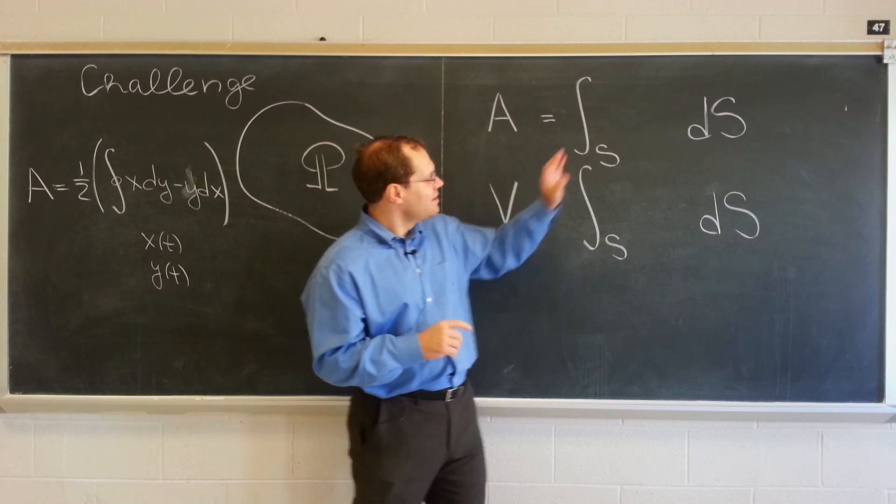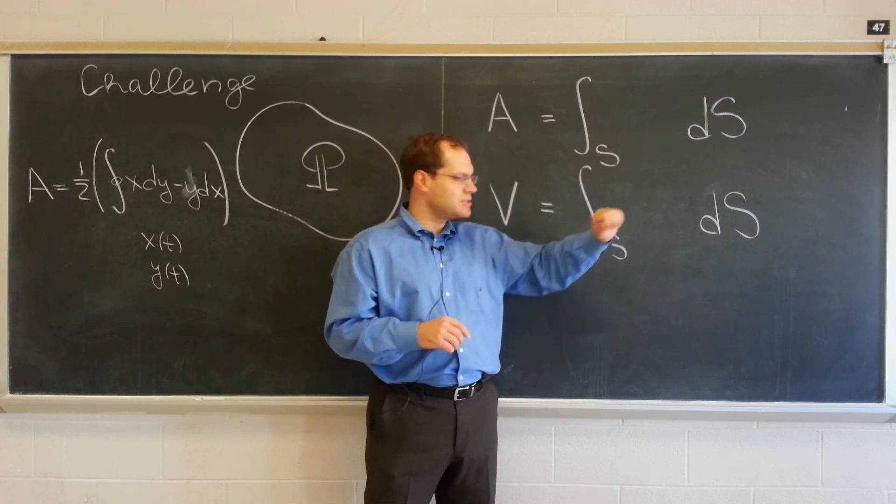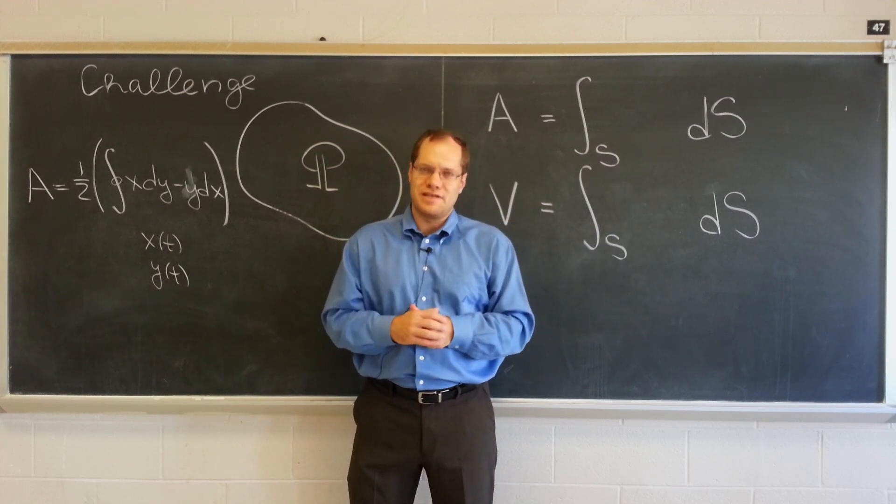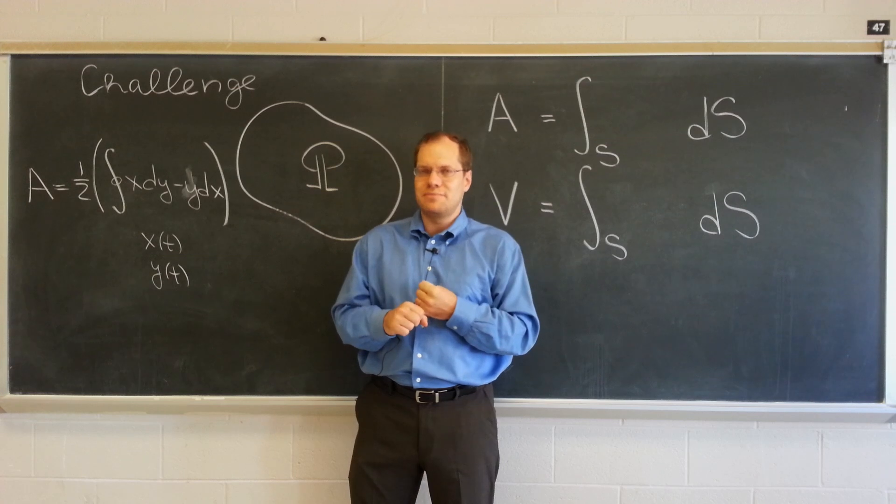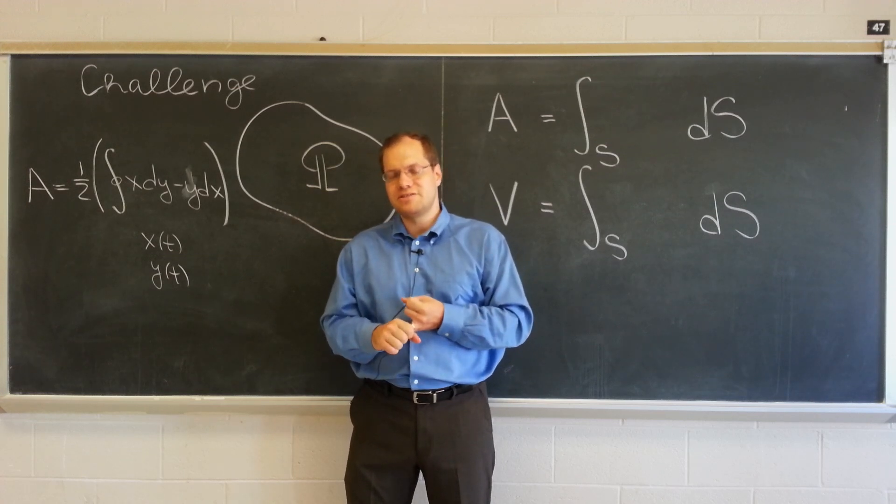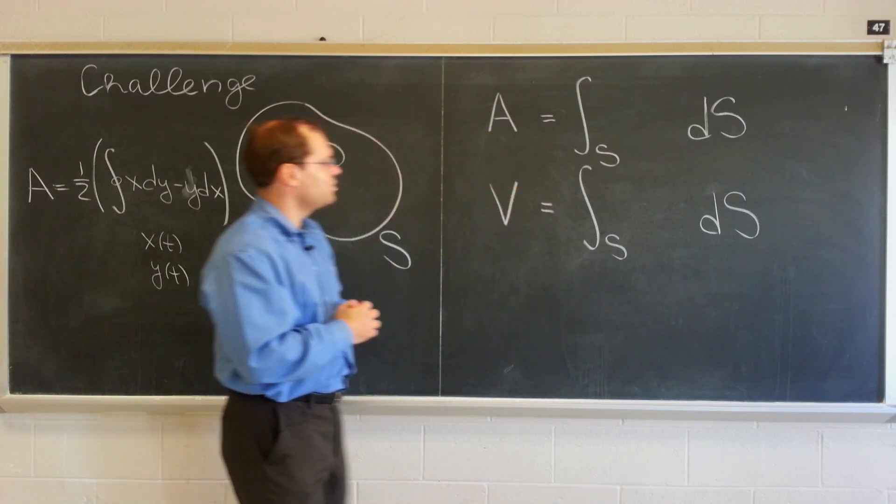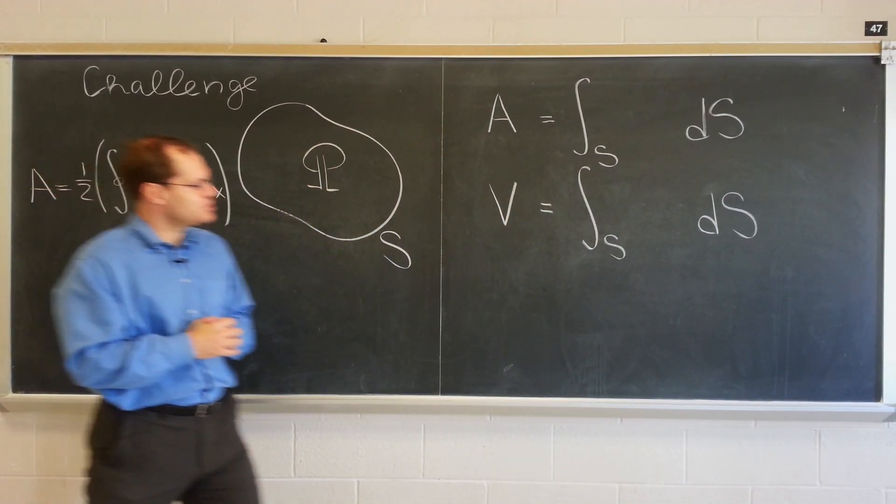Requirement number two is that the formula, so geometric is number one. Number two is that the formula works in any number of dimensions, gives area in two dimensions, volume in three dimensions, and can go even up from there and give generalized volume in four dimensions, and so forth. That's requirement number two.